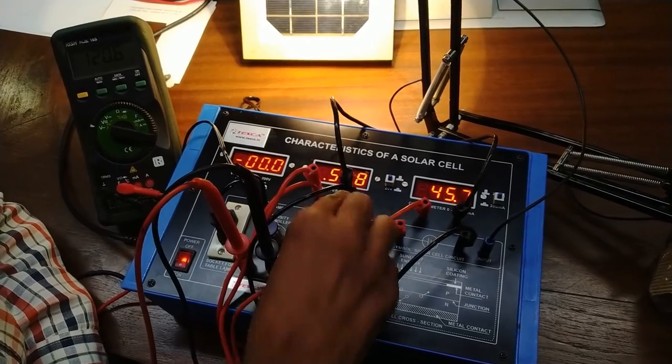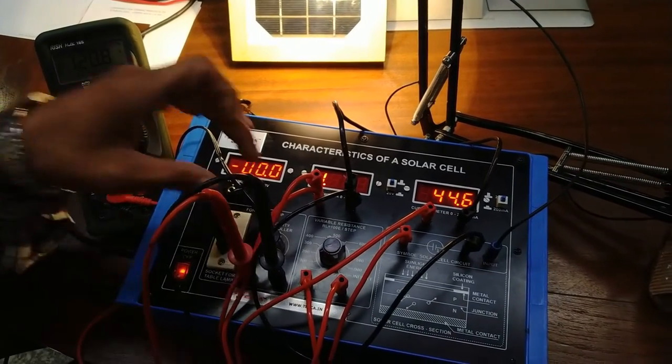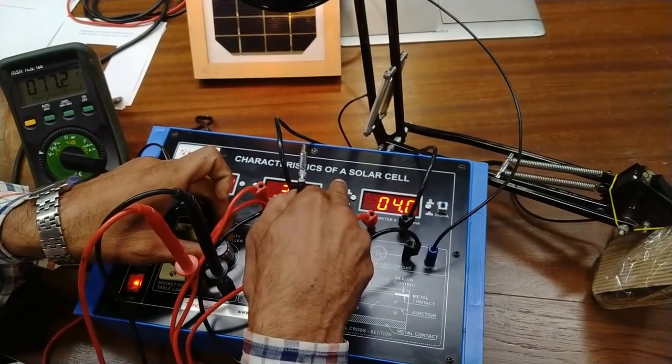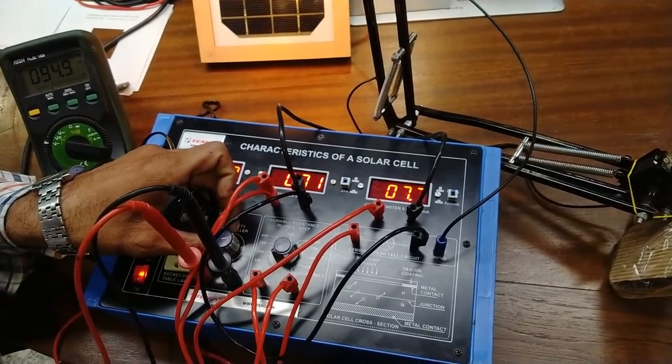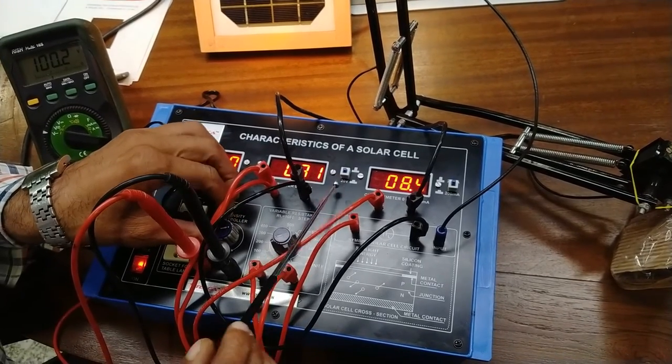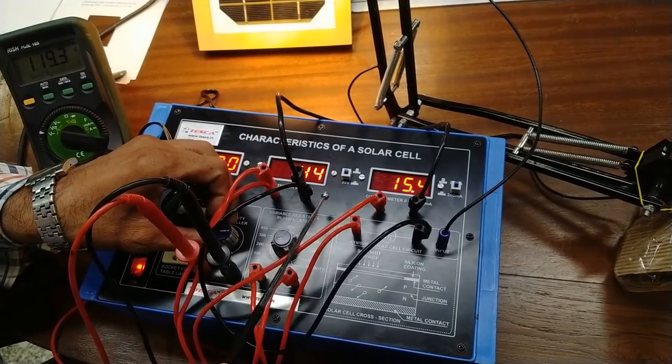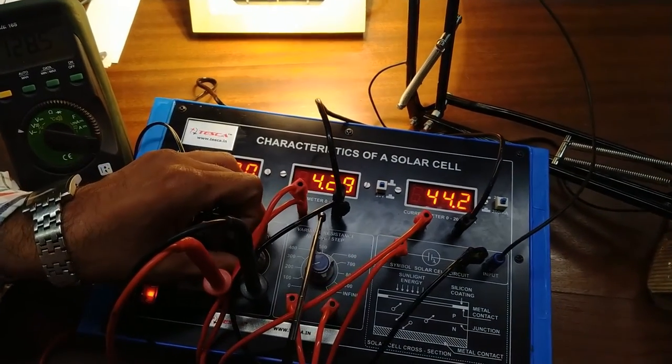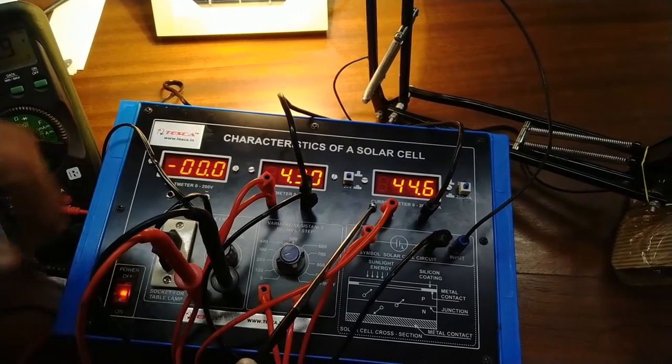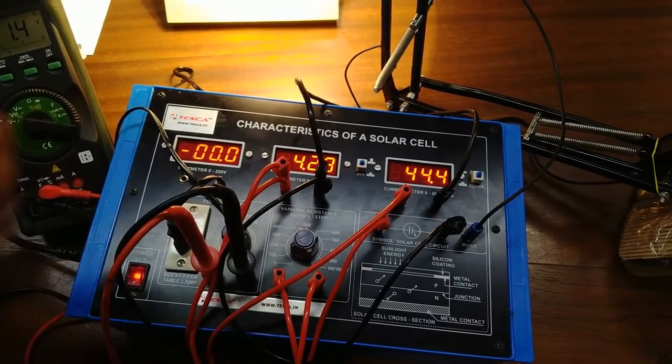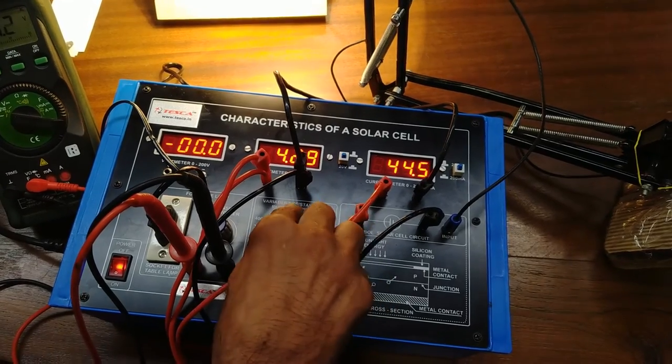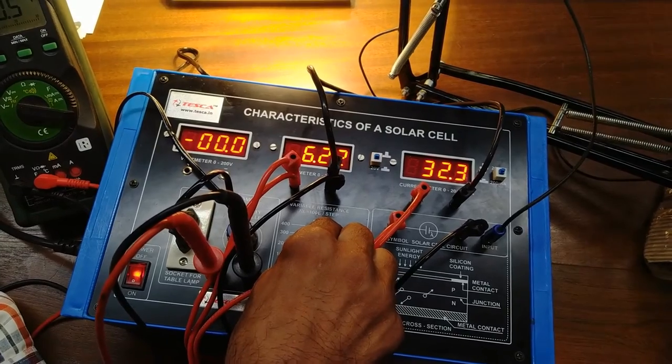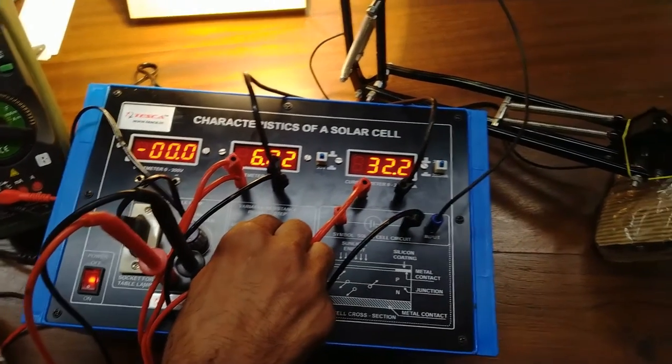At 100 ohm. For instance, now we have to select the 20V range and note down the voltage and current. After this, for 200 ohm, voltage has increased 4 to 6.2V. And current is decreased.